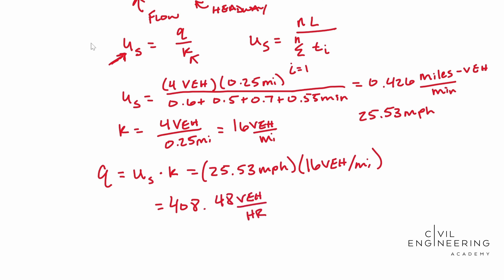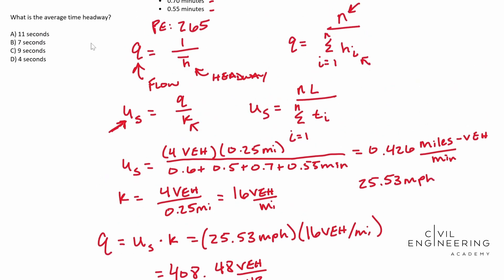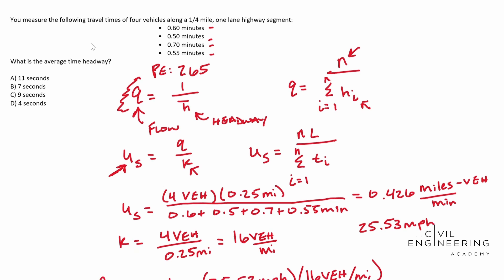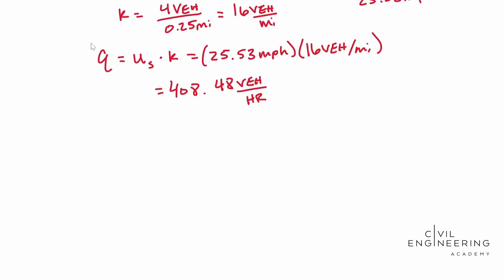And so whenever we go back to our original formula, which is going to be this guy, Q equals one over H. Let's rewrite that. Q equals one over H bar.